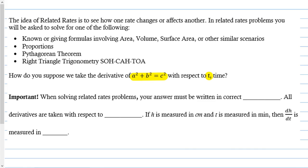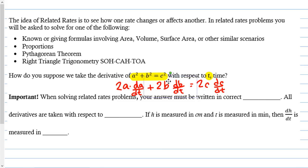Whenever we derive something with y, we had to use the chain rule and do dy/dx because we were differentiating with respect to x, but y is obviously not x. So here we have a, b, and c, which are obviously not t. So when I derive, I have to add on a chain rule term. For example, a squared becomes 2a · dA/dt, because I am deriving with respect to time t. Then plus 2b · db/dt equals 2c · dc/dt. So now this has been derived implicitly with respect to t.